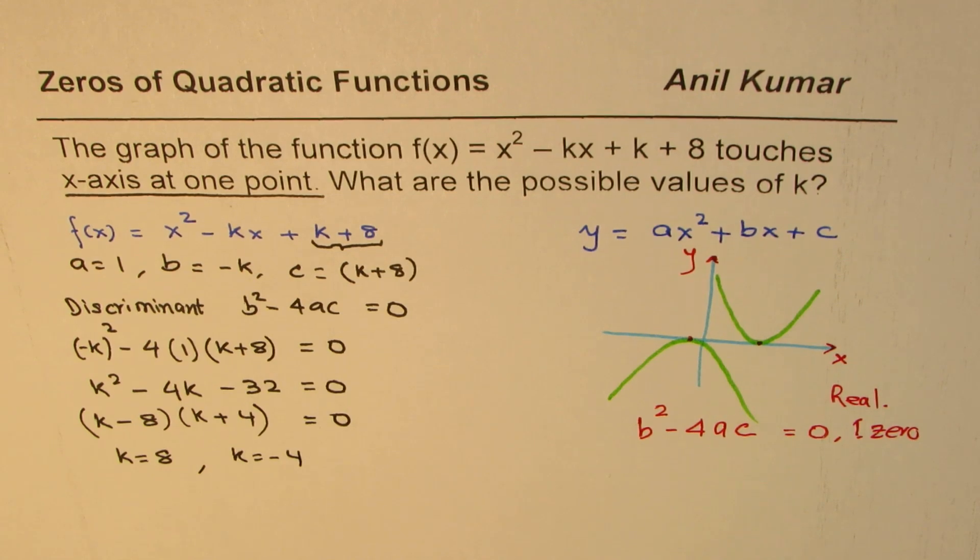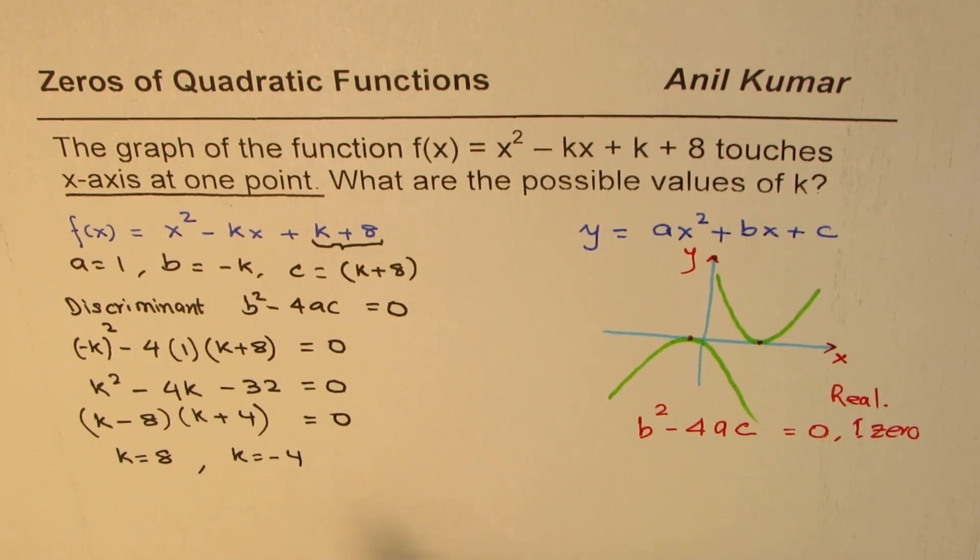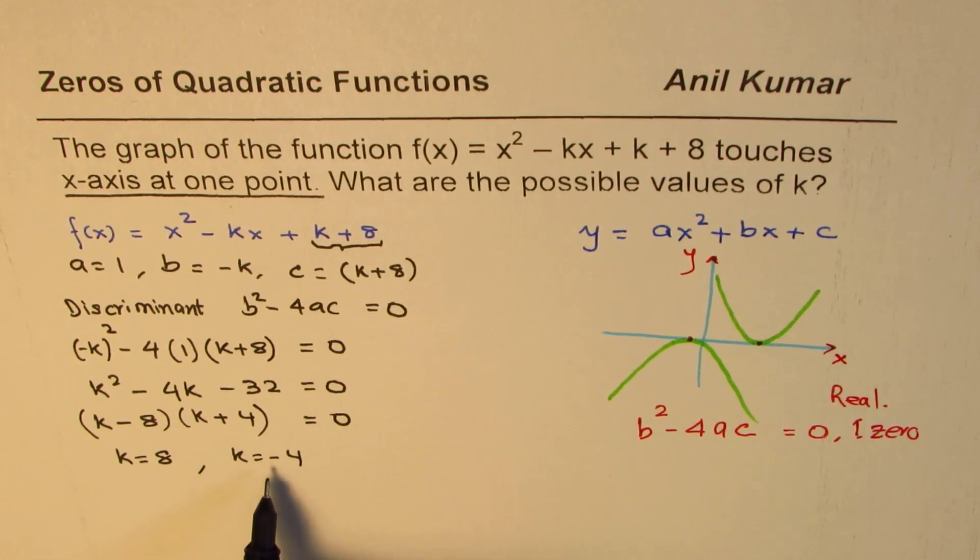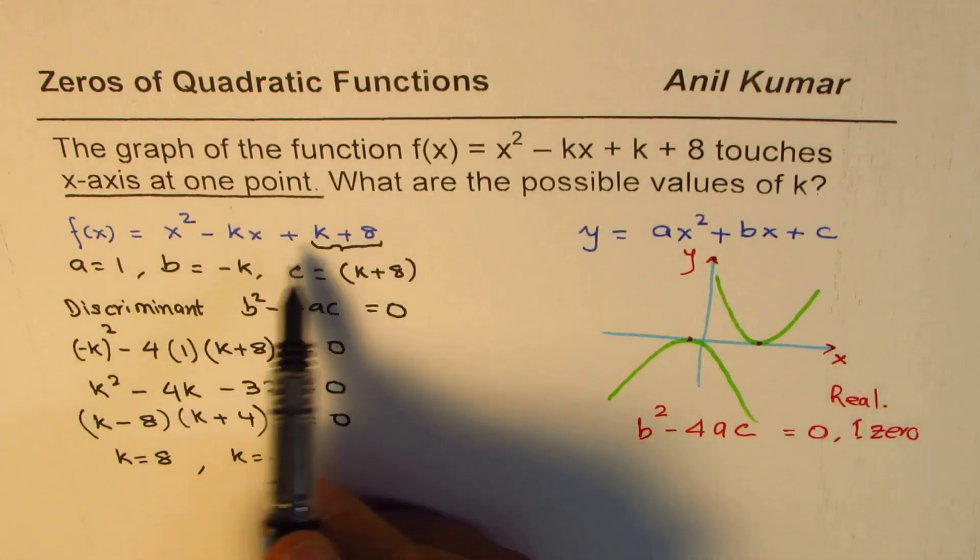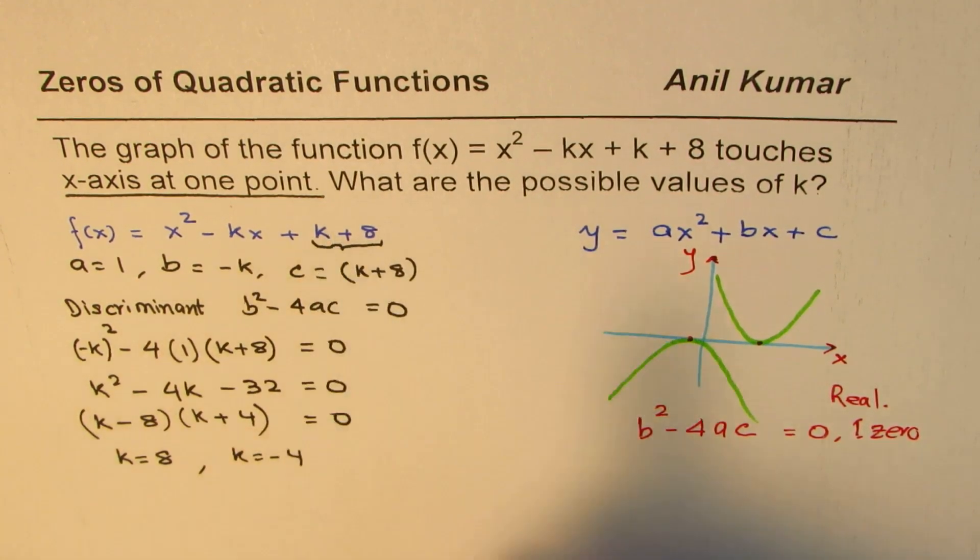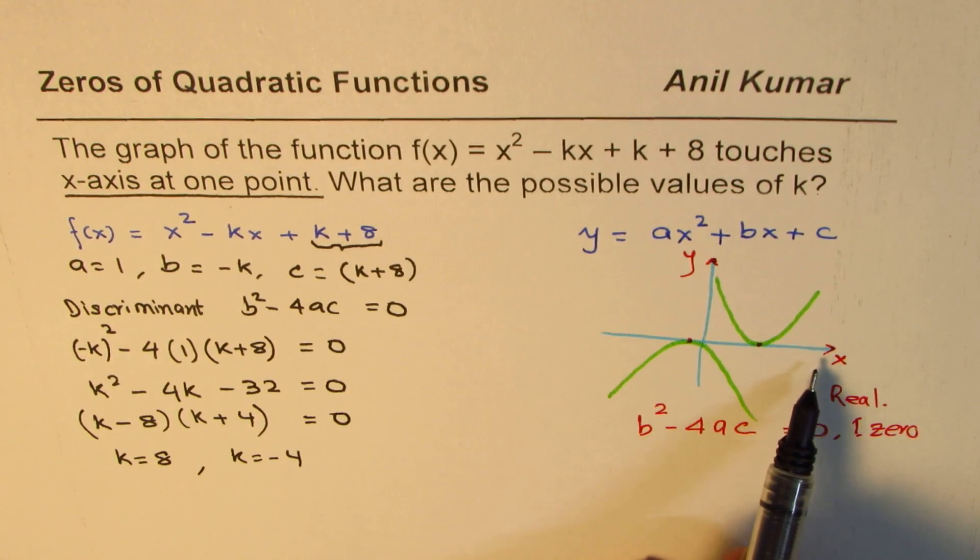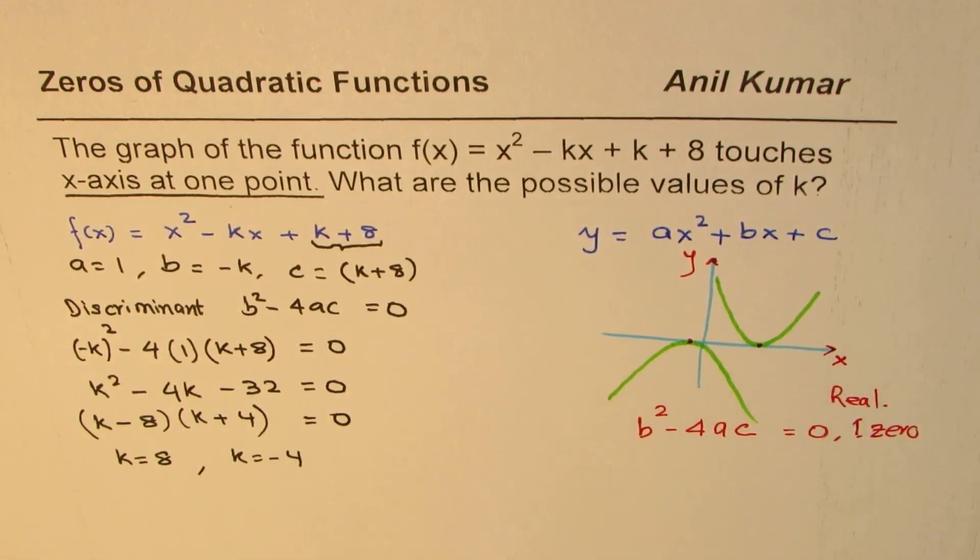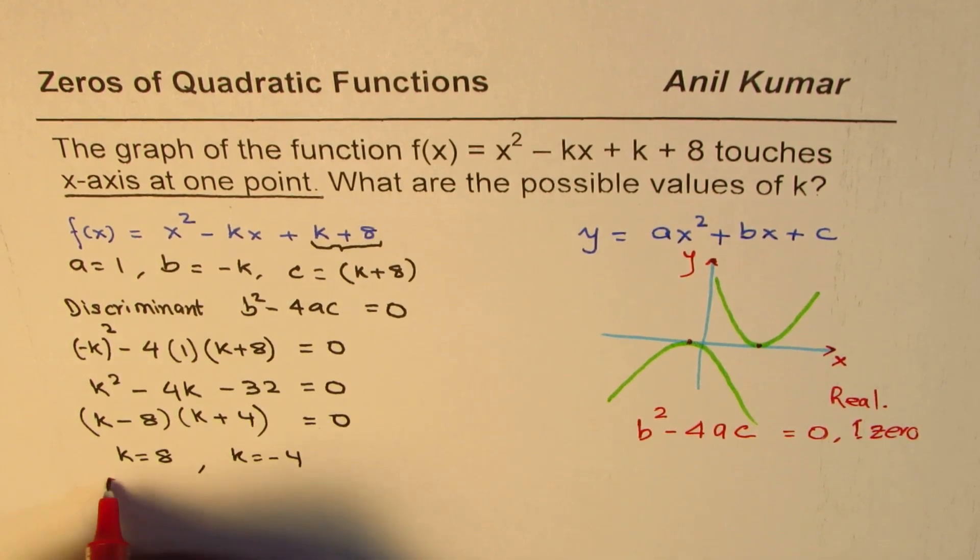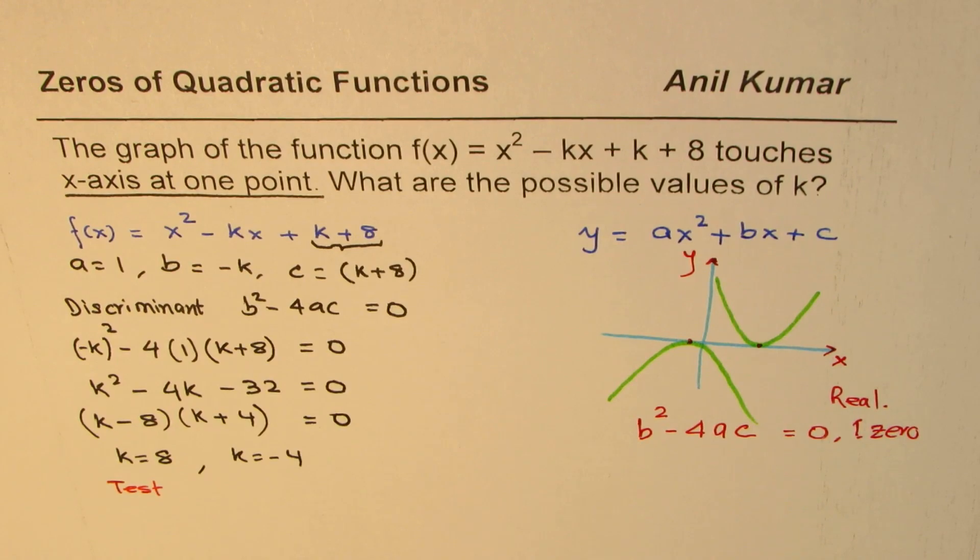So those are the two possible values for k which will ensure that this equation, the graph of this equation, touches the x-axis only at one point. So you can actually test this out also. Well, that could be your exercise. So you could do that.